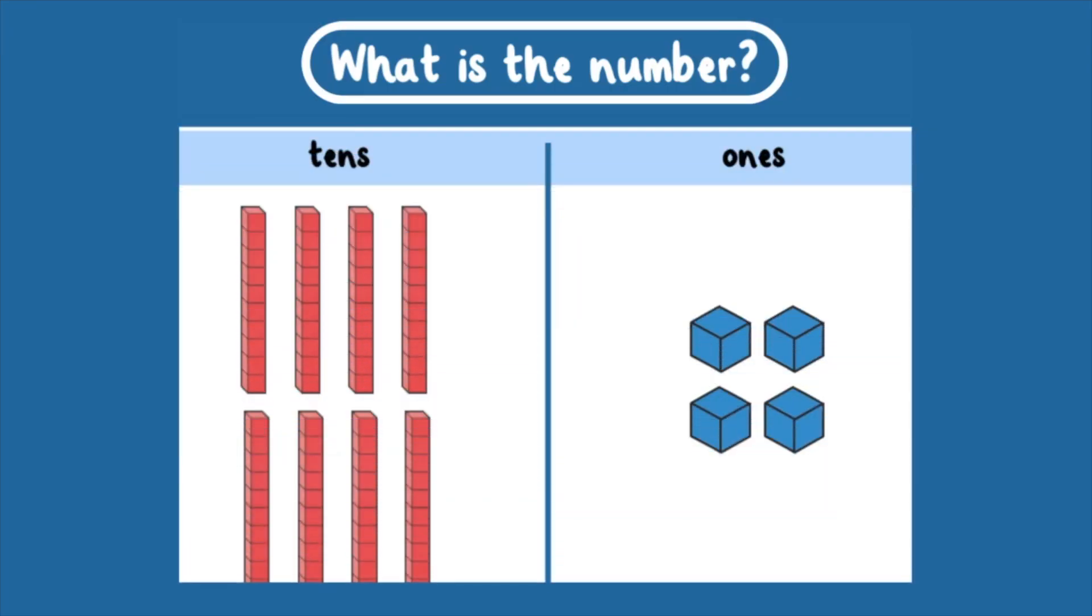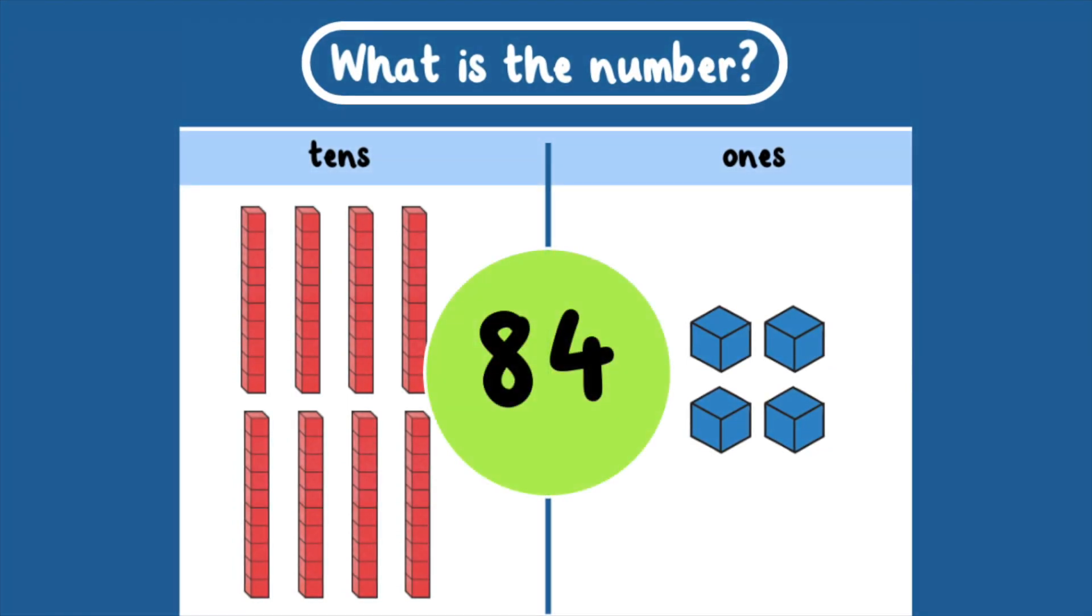What is the number? There are 8 tens and 4 ones. That equals 84.